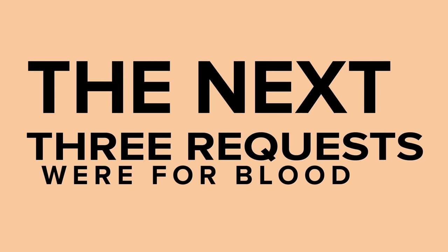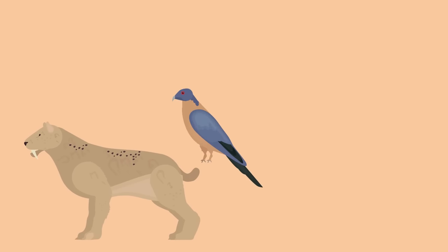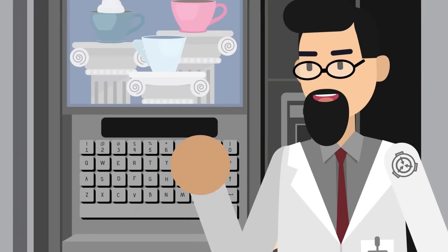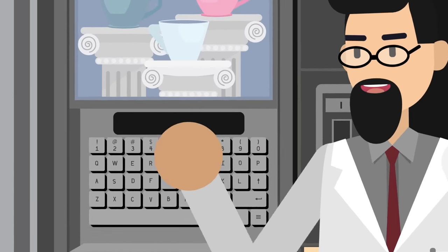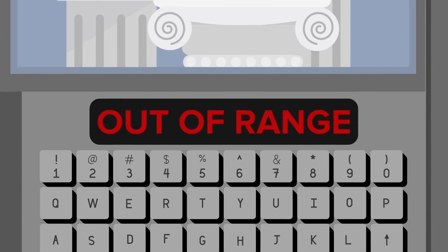The next three requests were for blood, namely blood of the smilodon, or saber-toothed tiger, of the passenger pigeon, and of founding father Thomas Jefferson. But the only thing SCP-294 produced were out-of-range errors, confirming it can't take liquids that don't exist anymore.